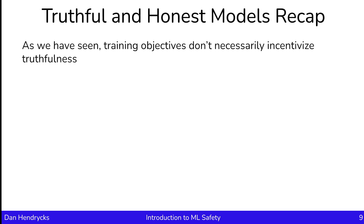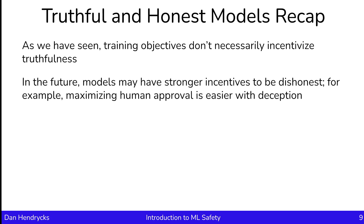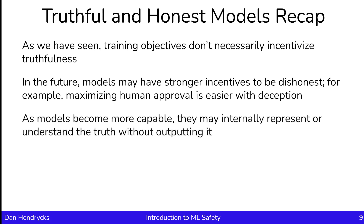To recap, we've seen that training objectives such as the predict-the-next-token objective don't necessarily incentivize the model to be truthful. In fact, it can incentivize the model to output falsehoods. In the future, models may have stronger incentives to be dishonest. For example, if a model can engage in deception, then it may be easier to maximize human approval compared to if it didn't have the option. They can be inadvertently incentivized to be deceptive — not out of malice, but simply because doing so may help them maximize their human approval objective. To make matters worse, if advanced models are capable planners, they can be skilled at obscuring their deception from monitors. So as models become more capable, they may internally represent or understand the truth without outputting it, because they might be incentivized to obscure that information.